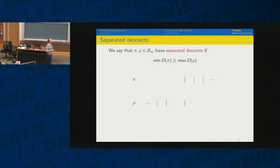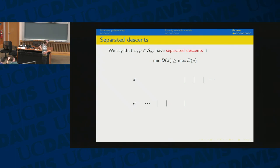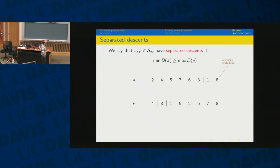The first rule is the separated descent rule — the easiest one. The picture: two permutations whose descents are separated, meaning the first descent of pi is greater than or equal to the last descent of rho. For example, pi = 2,4,5,7,6,3,1,8 and rho = 4,3,1,5,2,6,7,8 satisfy this property. We replace them with strings using different alphabets — rho uses 0,1,2,2 then blanks, pi uses all blanks then 3,4,5,5 — chosen so that they match at the boundary.